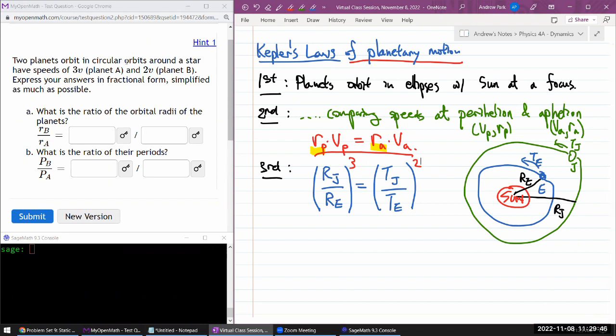So, that the farther away you are, not only does it take longer to orbit, which is what you would expect if they were moving at the same speed, but because they also move slower, they take even longer than same speed orbit would have taken. So, with that, it says, two planets orbit in circular orbits around the star have speeds this and this. Okay, answer your, express your answers in fractional form, simplified as much as possible. Okay. So, it says, what is the ratio of the orbital radii of the planet? So, it looks like I can use most of this, the Kepler's third law. With the only issue being, it's not in terms of the variables we are given, because we are given the speeds of the planets, not their orbital period. I can answer the second question more quickly.